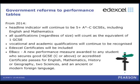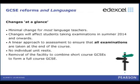Within the EBAC, students will need to get a grade C or above in a GCSE or accredited certificate in English, maths, history or geography, two sciences, and of course an ancient or modern foreign language. That can clearly include any of these four languages — Arabic, Greek, Japanese or Russian — so no change there, which is encouraging.